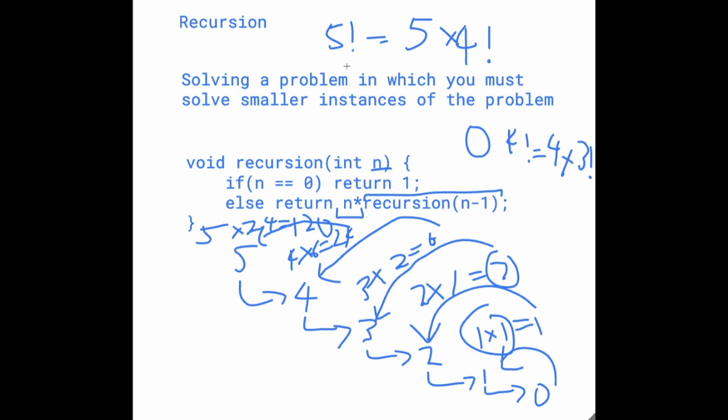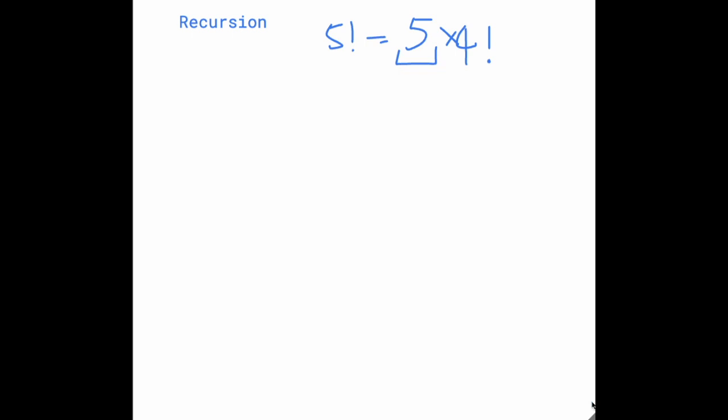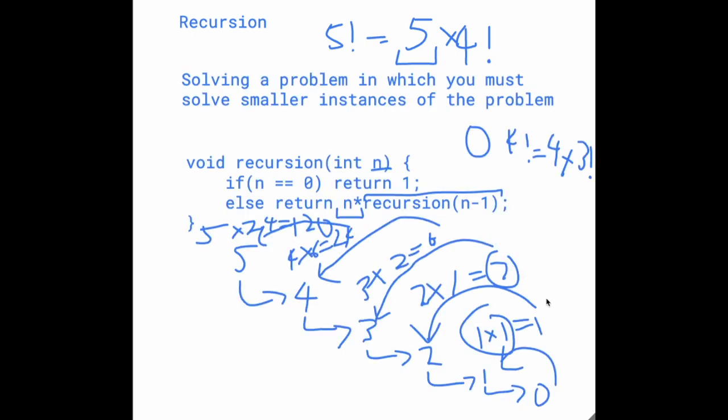This recursion is calculating the current value times the current value minus 1 factorial. And then we keep going down until we get to 0. And then we work our way back upwards. And then we get our answer, which is 120. So that is basically recursion.